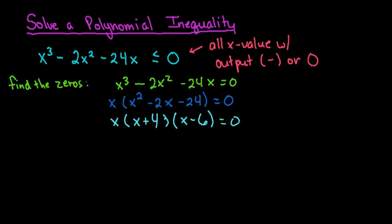So our zeros, we have 3 in this case. x can equal 0. The expression x plus 4 could also equal 0. So that tells us that we have another 0 at negative 4. And then x minus 6 could also equal 0. So x equals 6. So these three values are the three zeros for this polynomial equation.